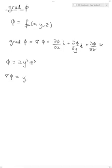Okay, so if we differentiate phi with respect to x, we'll be left with y²z³ i. If we differentiate phi with respect to y, we would have 2xyz³ j. And then finally, if we differentiate phi with respect to z, we would get 3xy²z² k.